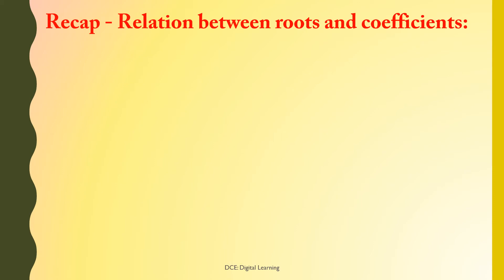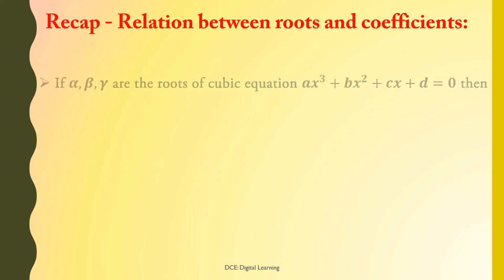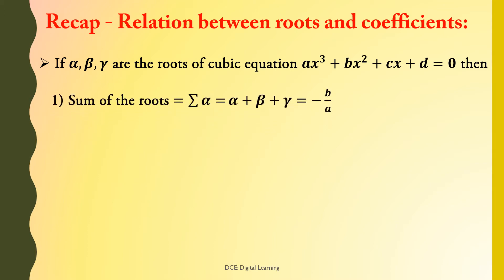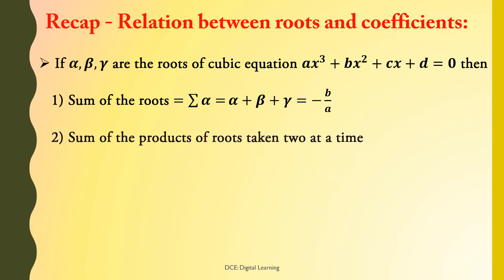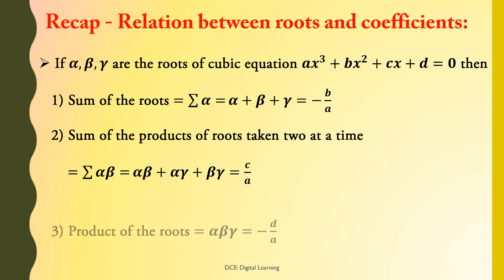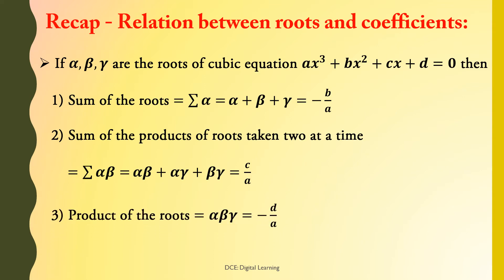First, recall the relation between roots and coefficients. If alpha, beta, gamma are the roots of cubic equation AX³ + BX² + CX + D = 0, then sum of the roots: sigma alpha = alpha + beta + gamma = −B/A. Sum of the products of roots taken two at a time: sigma alpha·beta = alpha·beta + alpha·gamma + beta·gamma = C/A. Product of the roots: alpha·beta·gamma = −D/A.